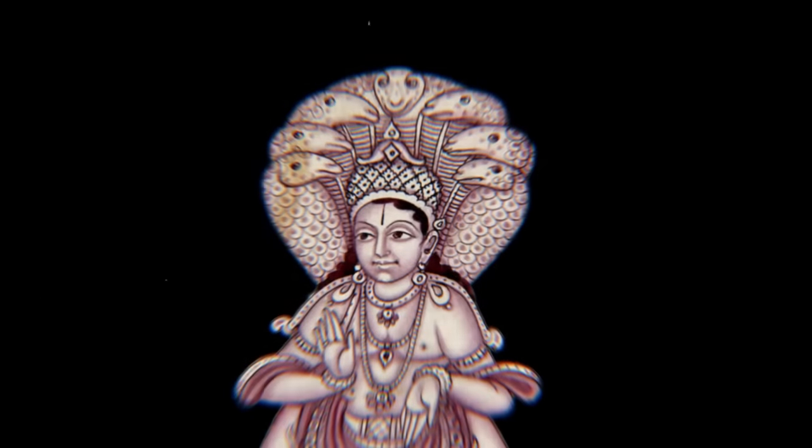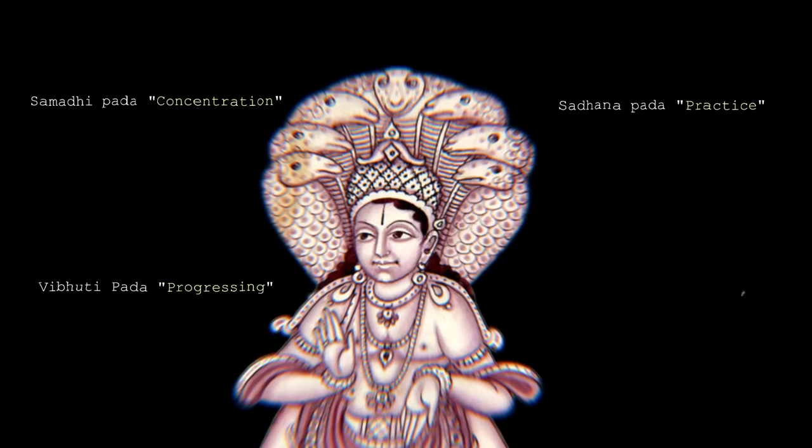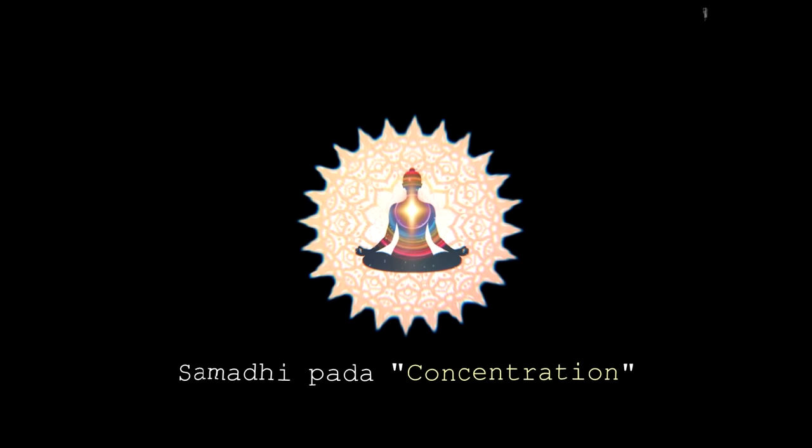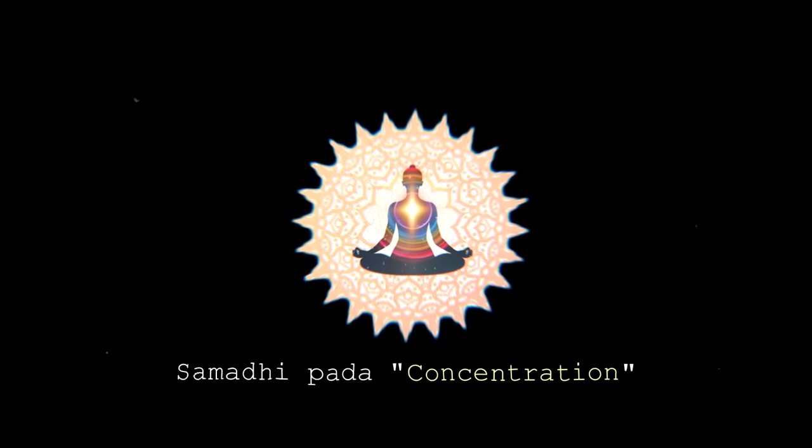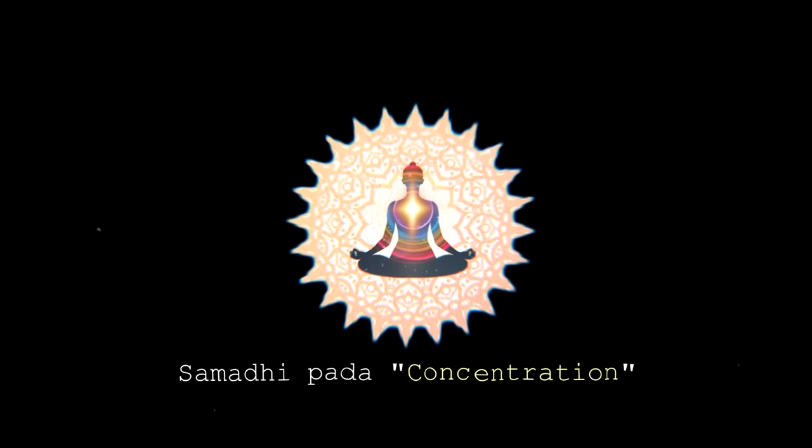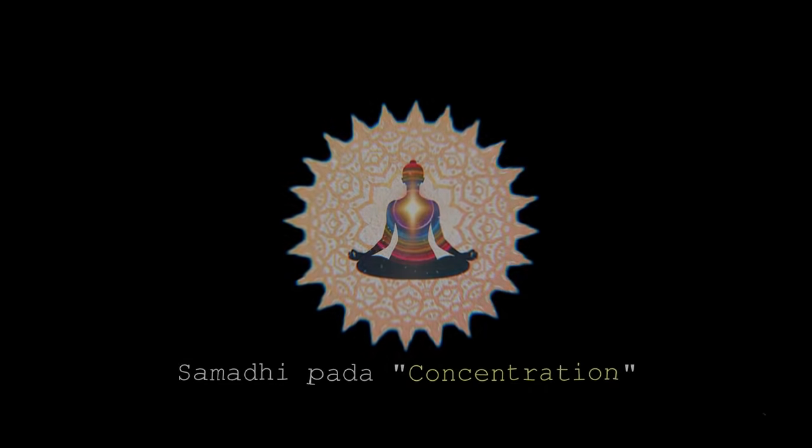Patanjali's Yoga Sutras consist of four paths. These are Samadhi Pada concentration, Sadhana Pada practice, Vibhuti Pada progressing, and Kaivalya Pada liberation. Samadhi Pada deals with the introduction to the nature and methods of Yoga in its various forms. It describes the various modifications of the organs including Chitta, which is an internal organ of a human being.